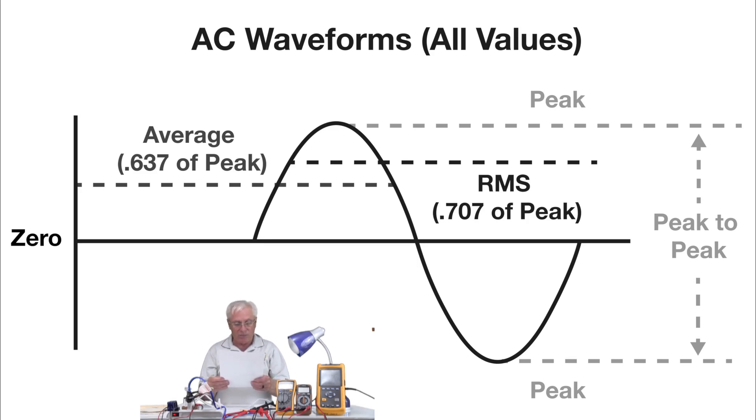RMS values are sometimes called the effective voltage values and current values also. RMS values produce the same heat in a purely resistive load as a DC voltage and current of the same value. So the RMS values are the equivalent of a DC circuit of the same voltage.